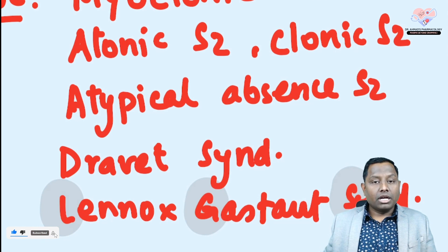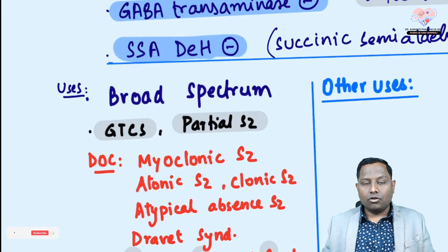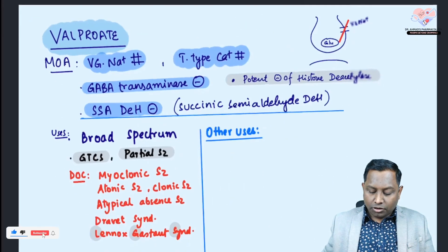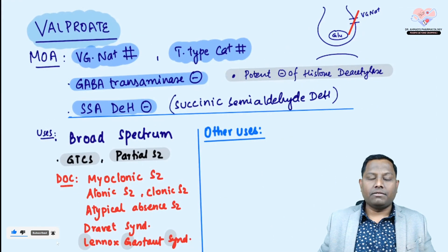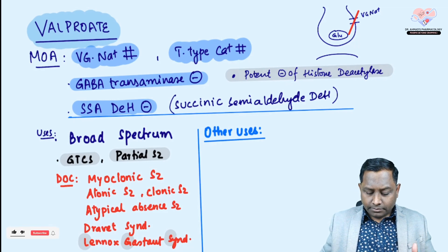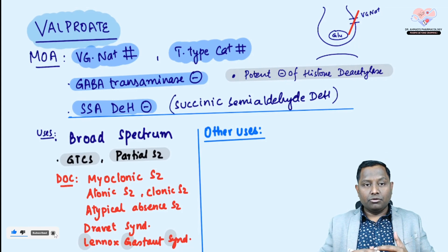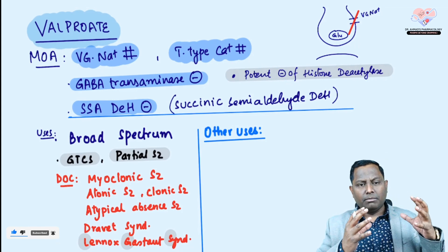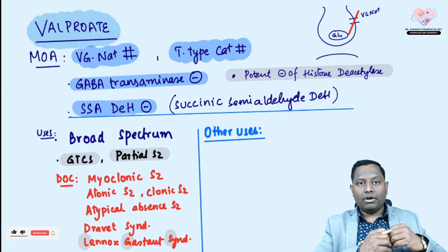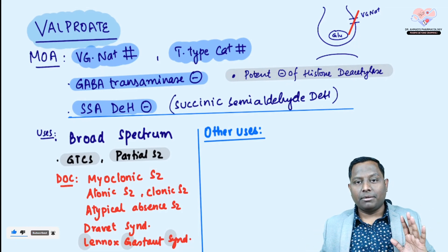Valproate is also the drug of choice in Lennox-Gastaut syndrome (LGS), which is characterized by recurrent epileptic episodes. There are newer drugs for Dravet syndrome and LGS, such as stiripentol, that have been discussed in previous lectures. Apart from epileptic uses, valproate works via multiple mechanisms and can be utilized in almost all kinds of seizures.